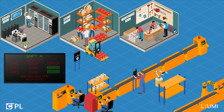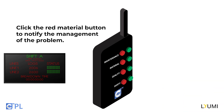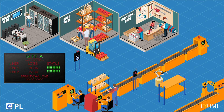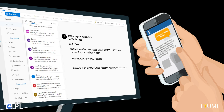As soon as production stopped, the worker quickly clicks the problem-labeled button on the Undawn station, notifying management of the issue. From here, the breakdown time starts, and the Undawn station system generates a signal which is then sent to the server. From there, a message is sent to the warehouse.